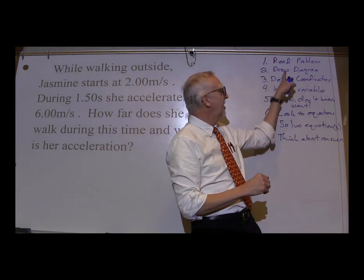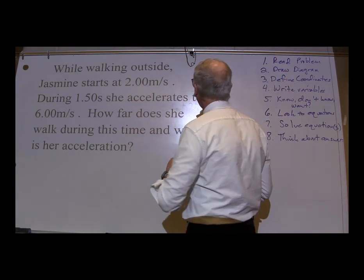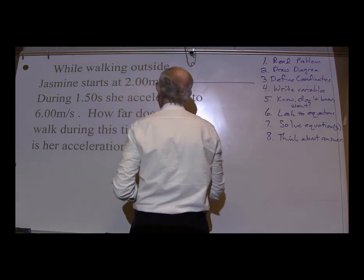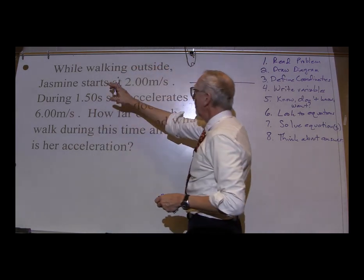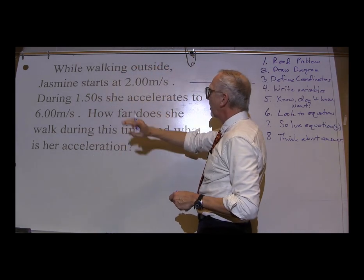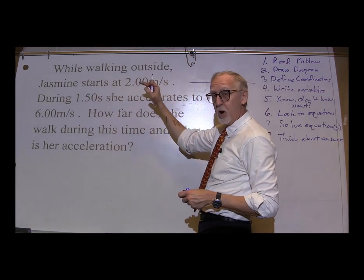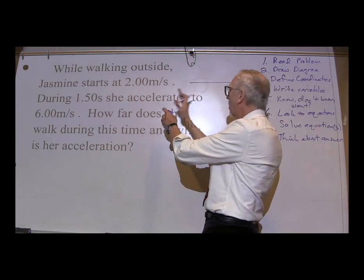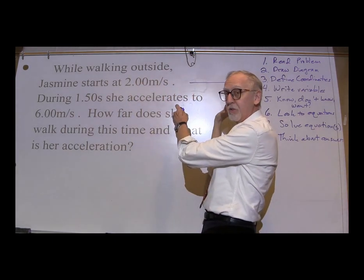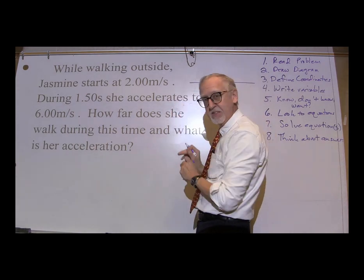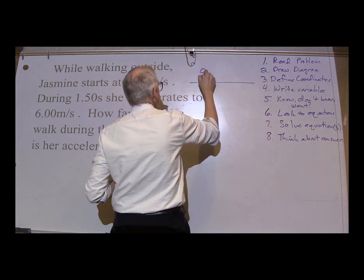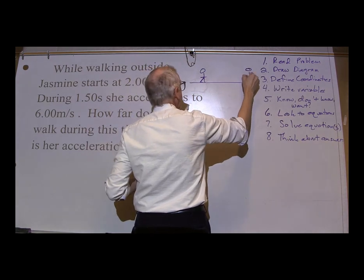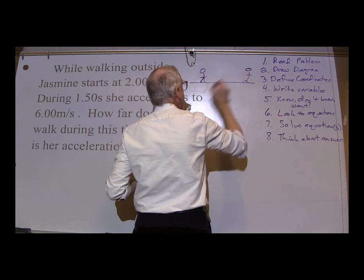What do we do next? Let's draw a diagram. We've got Jasmine going for a walk. We're going to have two points in the walk — initial and final. We might as well just draw her walking to the right; it makes it a little bit easier. So here's Jasmine initially, and here is Jasmine finally.